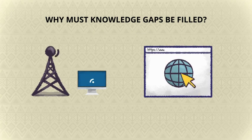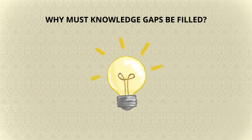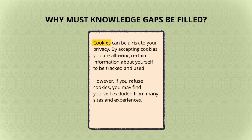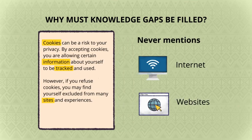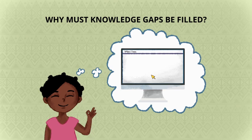Learners would need to have an understanding of the internet and websites to fully comprehend this text. The text uses words like cookies, information, tracked and sites, but never actually mentions the internet or websites. For some learners, they already have this background knowledge.